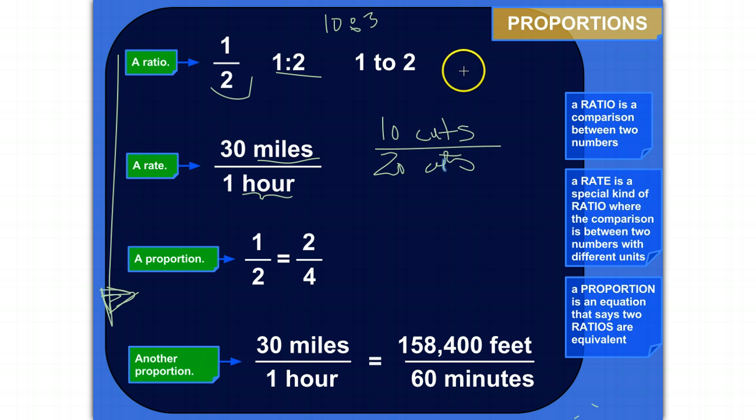But if I wanted to say 10 cuts to 20 scrapes, that's two different units - that would be considered a rate. The classic one you hear all the time is miles per hour. We'd write this as 30 miles per hour, MPH. We're comparing miles to hours, two different units.